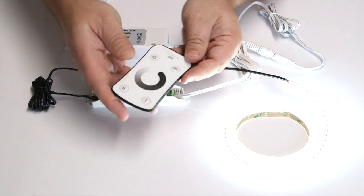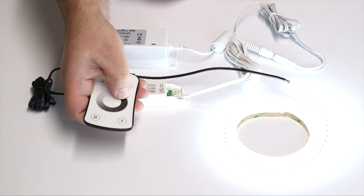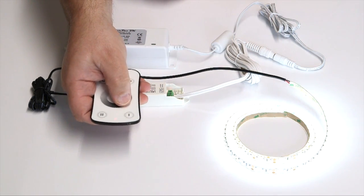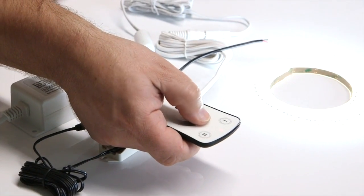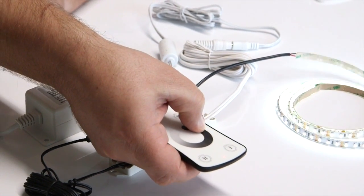Touching various areas of the wheel on the remote achieves varying brightness levels as shown. Full instructions are provided on the website and with the supplied manual.